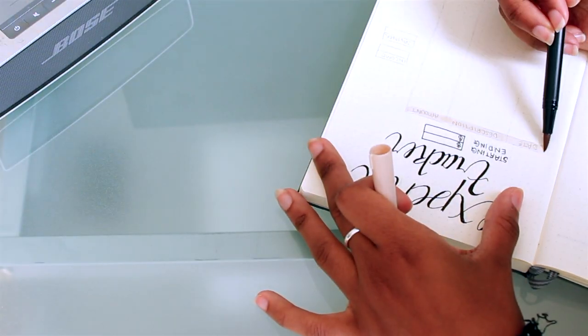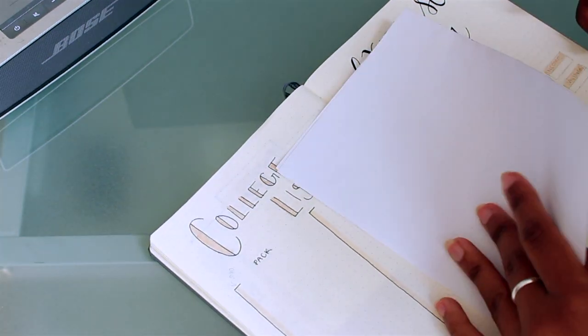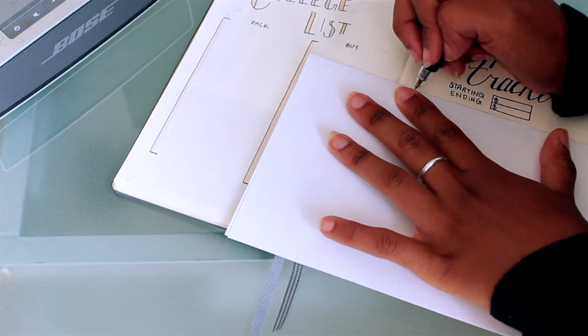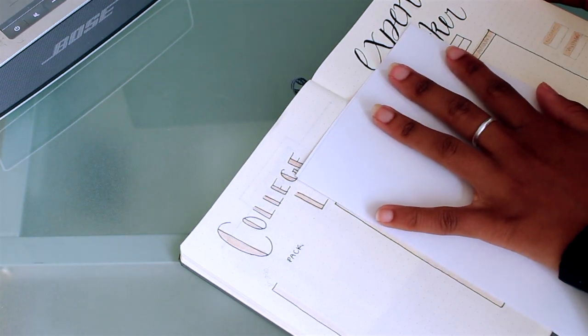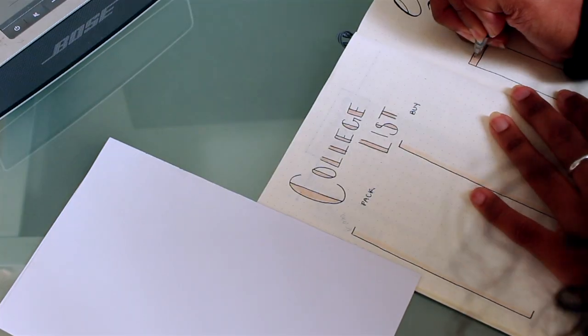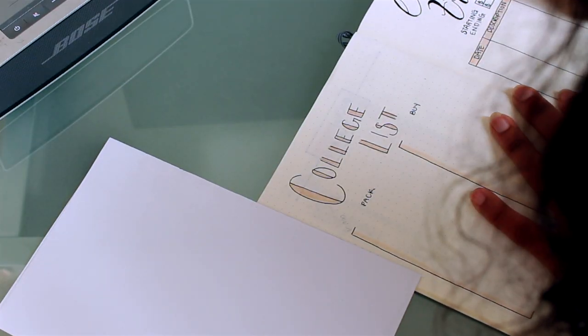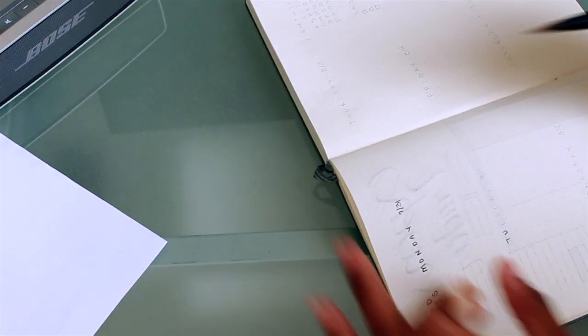On the side you can't really see it but that just checks my income for the month and my savings. Also this little list in the middle will list out the date, the description, and the amount of whatever I spent money on.